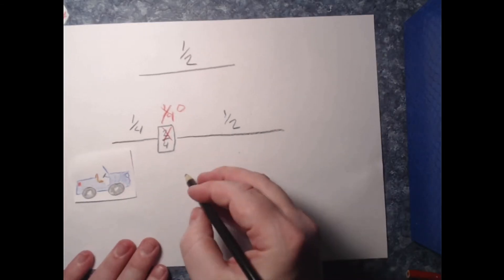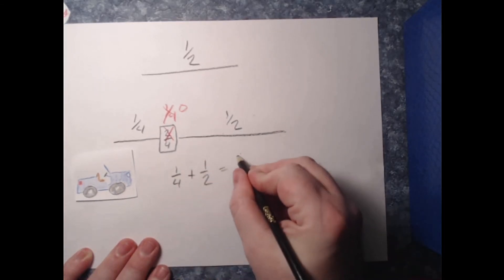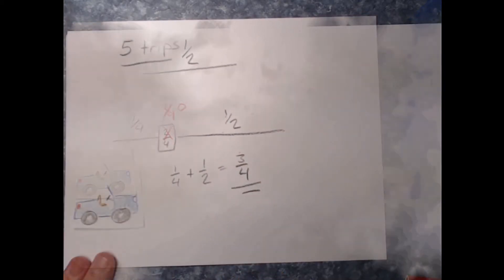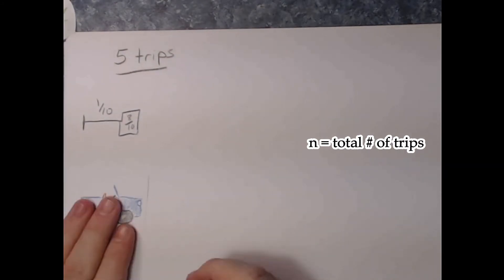Now we've gone farther than our initial one-half distance by an additional one-fourth. This algorithm for leaving fuel can be generalized, and how far we go really depends on exactly how many trips we're willing to take.